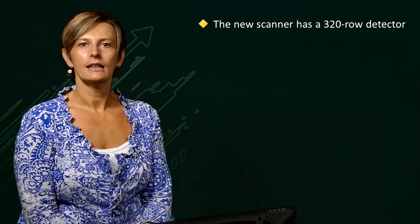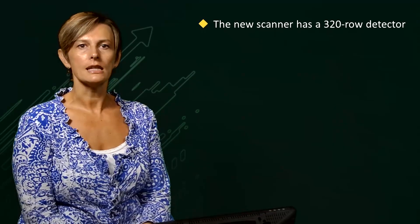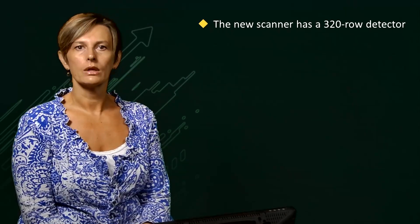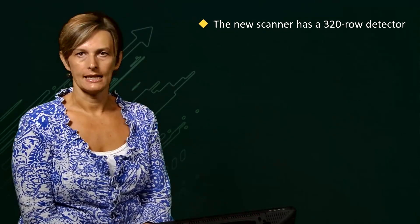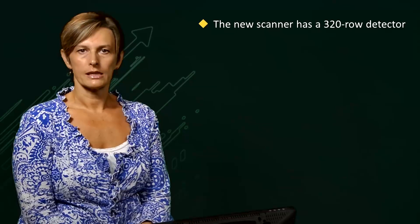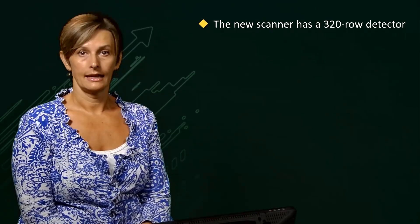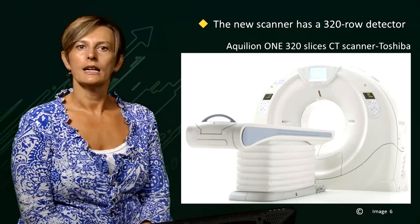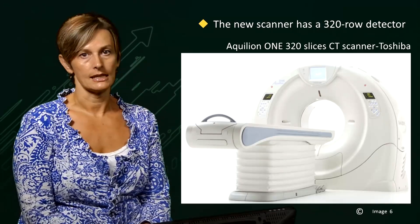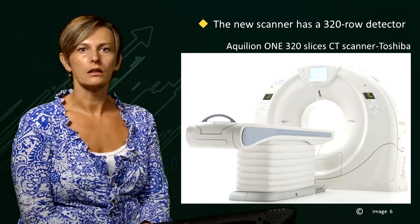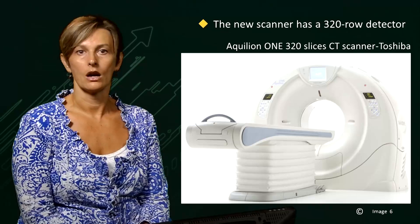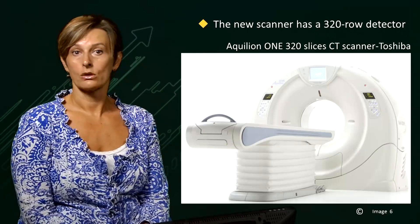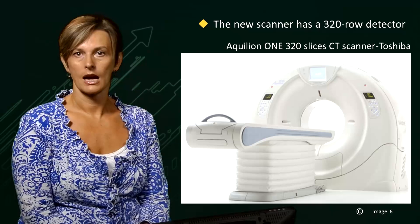If you are going for a CT scan, it is likely that you will be scanned with a CT scanner using 64 rows of X-ray detectors, also called 64-slice CT. However, newer scanners now have a 320-row detector, like this instrument. The Aquilion ONE is the world's first dynamic volume CT imaging system that enables acquiring entire organs with one volume scan, one rotation. Imaging a larger area of the body at one time is now possible, and scans take only 200 milliseconds.